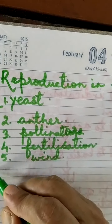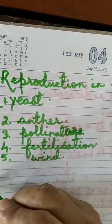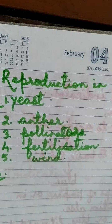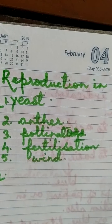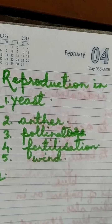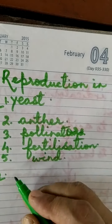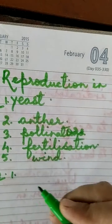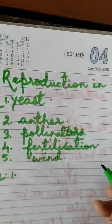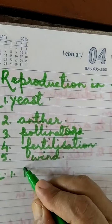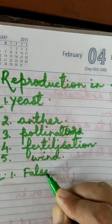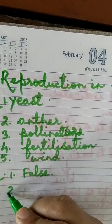Now Part B — true or false. The first statement is: yeast reproduces asexually through fragmentation. This is wrong because yeast reproduces asexually through the budding process, not fragmentation. So the first one is false.